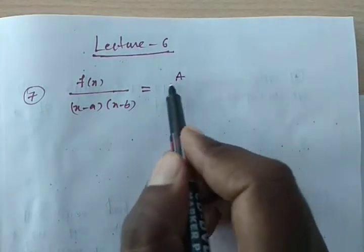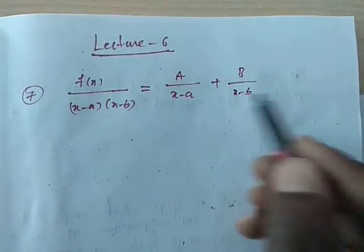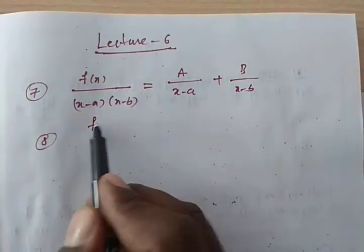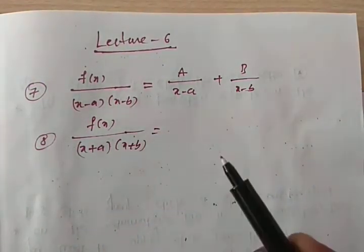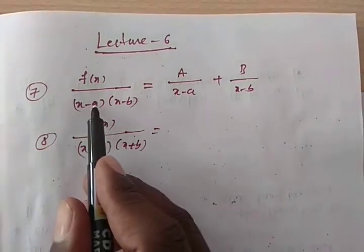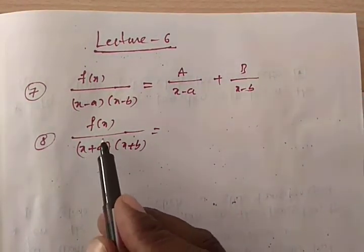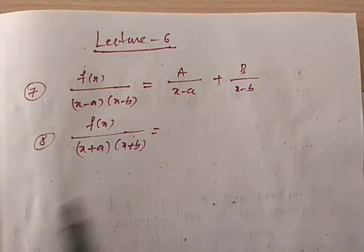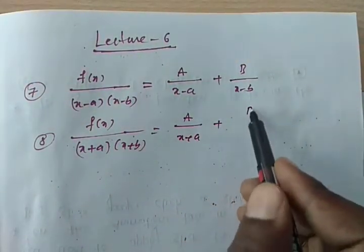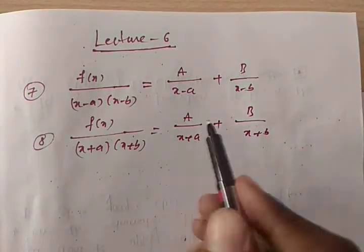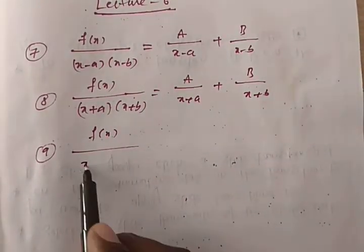The method to decompose this is: write A by (x minus a) plus B by (x minus b). Now take another example: f(x) divided by (x plus a)(x plus b). Whether the factors are (x minus a) or (x plus a), we treat them as linear polynomials and divide the same way — A by the first factor plus B by the second factor.